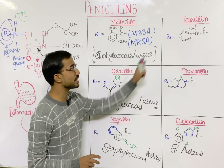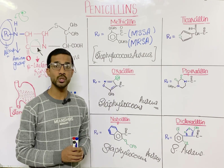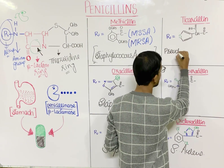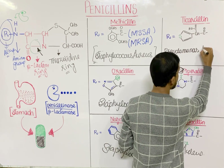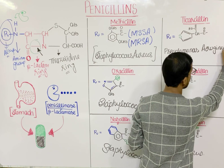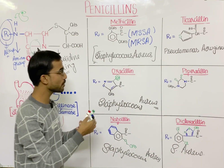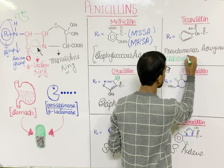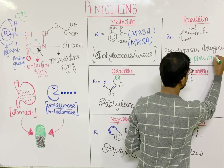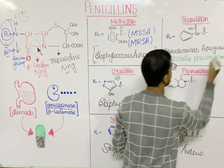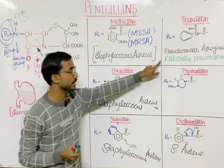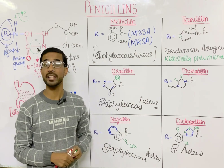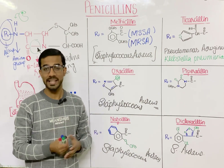Next is ticarcillin. Ticarcillin is used against Pseudomonas aeruginosa and can also be used against Klebsiella pneumoniae. It can be used against these bacteria along with aminoglycosides to enhance their effect.